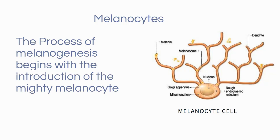Those melanocytes have the ability, via their dendritic octopus-like legs, to provide melanin pigment to approximately 35 keratinocytes in the layers of the epidermis. The melanocyte cell itself never moves from the stratum germinativum. Melanocytes originate from the neural crest and migrate to the epidermis.